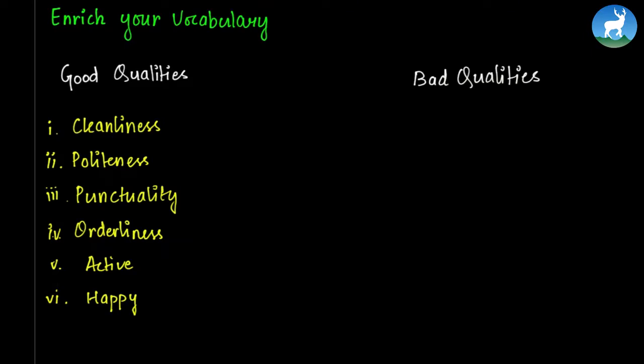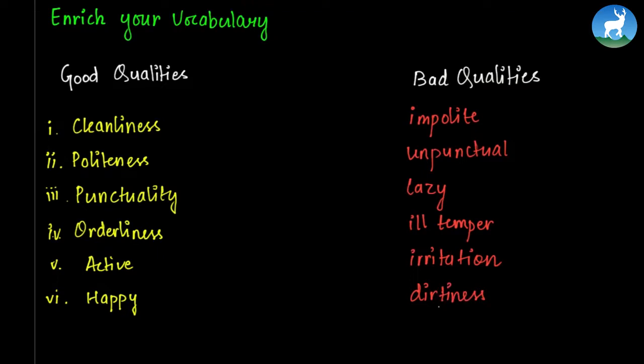Now, let's go and find words for bad qualities. So in the paragraph where the writer has full evidence about how full of suffering a student life is, we can find some bad qualities there. So they are being impolite, unpunctual, being lazy. Laziness is another bad quality. And short-tempered or ill-tempered, as mentioned in the paragraph. And being irritated, the irritation. Now, these are the bad qualities which we shouldn't have. And the major one is dirtiness.